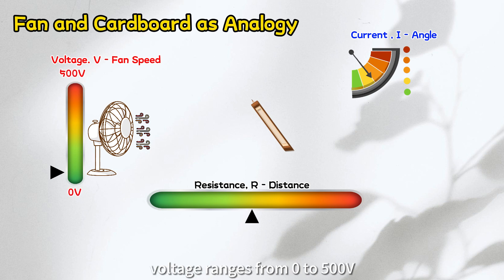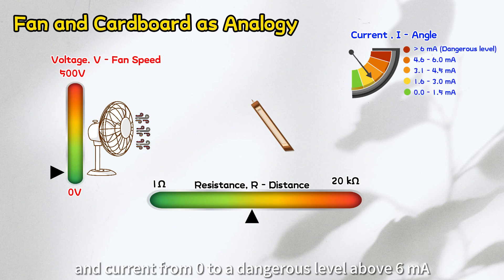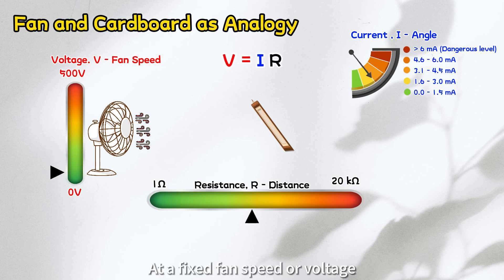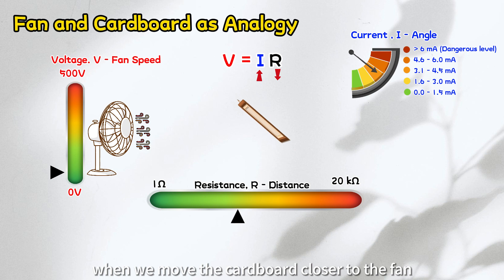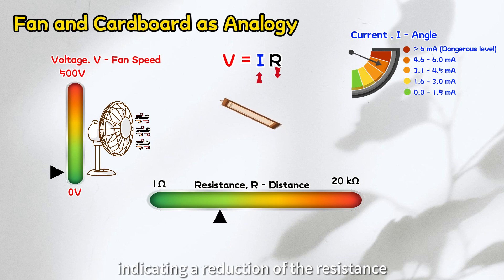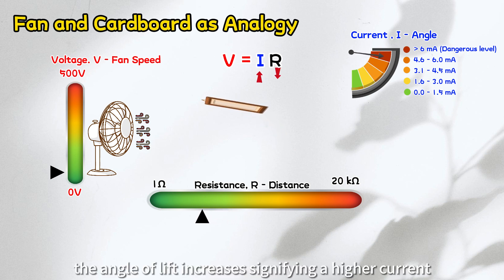Voltage ranges from 0 to 500 volts, resistance from 1 ohm to 20 kiloohms, and current from 0 to a dangerous level above 6 milliamps. At a fixed fan speed or voltage, when we move the cardboard closer to the fan, indicating a reduction of the resistance, the angle of lift increases, signifying a higher current.